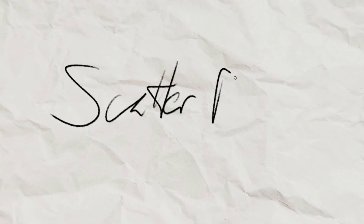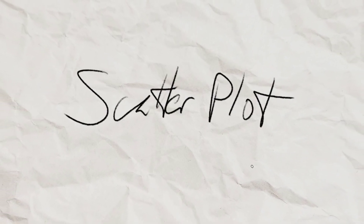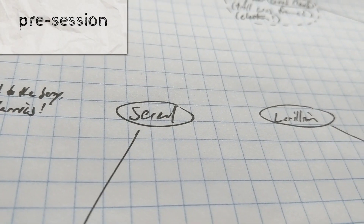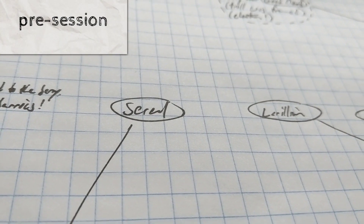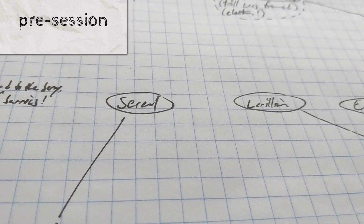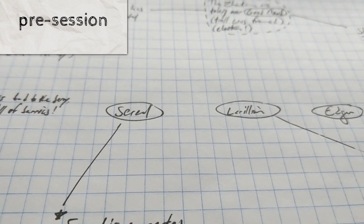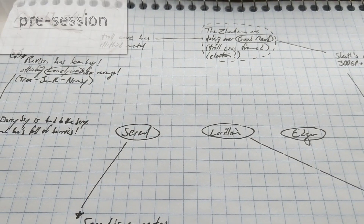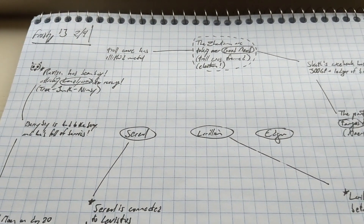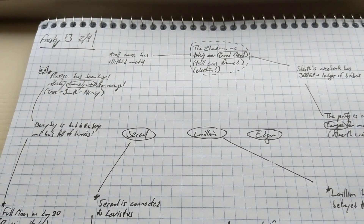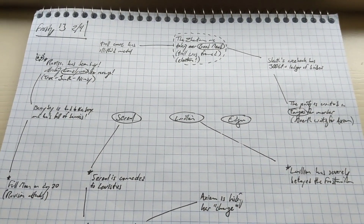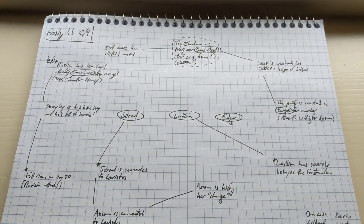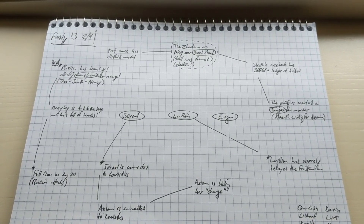So as a dungeon master, I've been using this method for both my prep and note taking during the session! Here's what my scatterplot looked like before a recent session! My three PCs listed across the middle, secrets and scenes are all around them, with important locations or names underlined or circled! I have some lines connecting things, but I recommend saving your line drawing for during the session, and there's a little box of NPC names down in the corner, just in case!